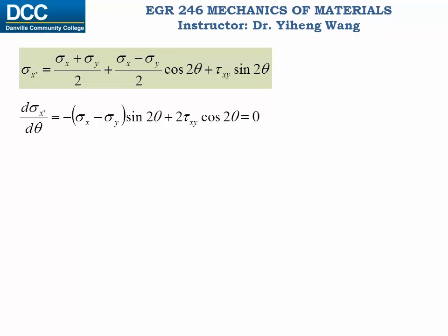From this equation we can solve for theta in terms of tangent of theta. Here, since sigma_x, sigma_y, and tau_xy are all known, we can evaluate theta. We give it a special name theta_p, because the corresponding normal stress — either the minimum or maximum normal stress — is known as the principal stress.